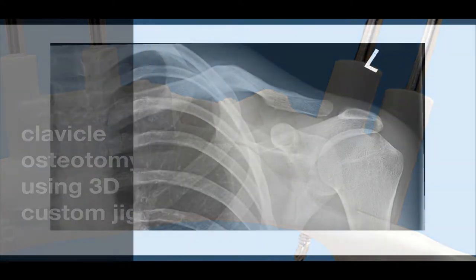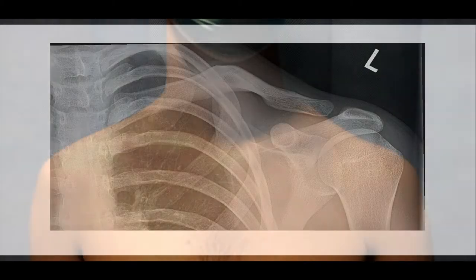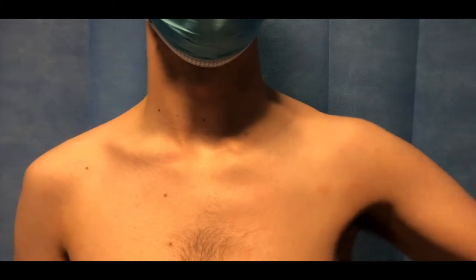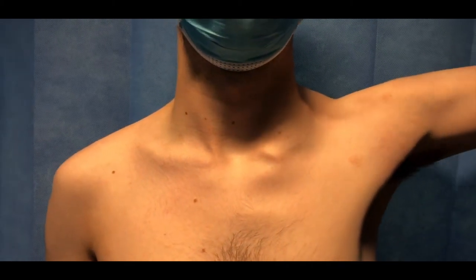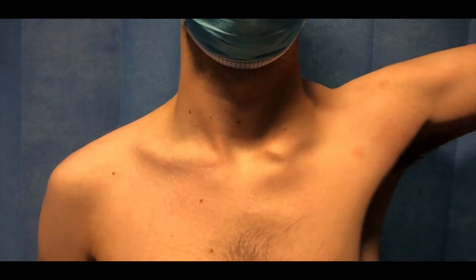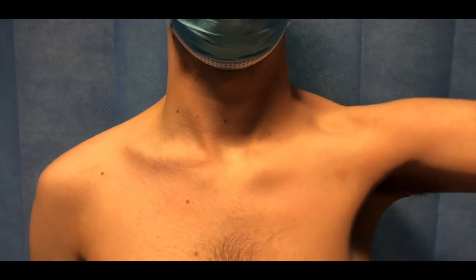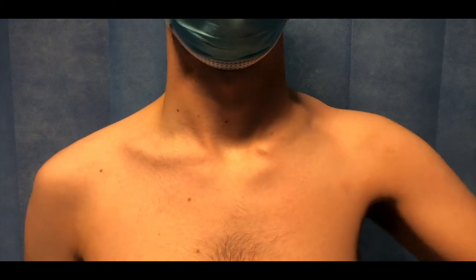This is the X-ray of a 17-year-old boy who had sustained a mid-shaft clavicle fracture 18 months previously, which had gone on to a malunion. About a year after his injury he developed spontaneous anterior recurrent instability of his sternoclavicular joint whenever he abducted and retracted his shoulder.